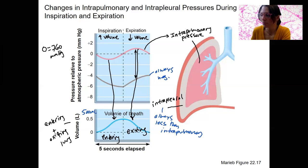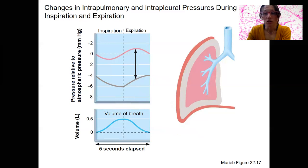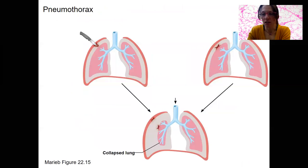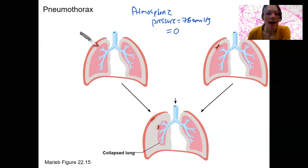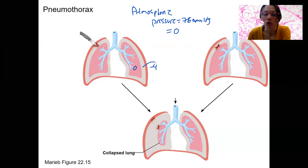That volume is called tidal volume. I want to look again at this negative pressure and what happens if this negative pressure in the intrapleural space is disrupted. At rest, atmospheric pressure is 760, which we call zero. In a resting lung, intrapulmonary pressure is 0 and intrapleural pressure is negative 4. That's the normal, happy state.